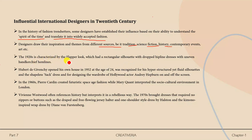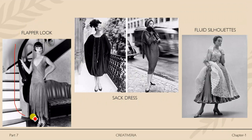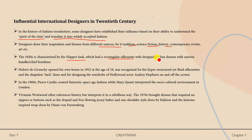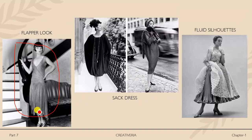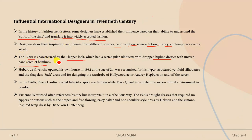The 1920s is characterized by the flapper look — a rectangular silhouette with a dropped hip line and uneven handkerchief hemlines. Givenchy opened his own house in 1952 at the age of 24 and was recognized for hyper-structured yet fluid silhouettes, the shapeless sack dress, and for designing the wardrobe for Hollywood actress Audrey Hepburn on and off screen.